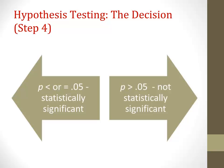For example, if we set an alpha level of 0.05 and our p-value is less than 0.05 when we conduct our analysis, we can consider our results statistically significant and therefore reject the null hypothesis. If our p-value is greater than 0.05, we state that our results are not statistically significant and we fail to reject the null hypothesis.